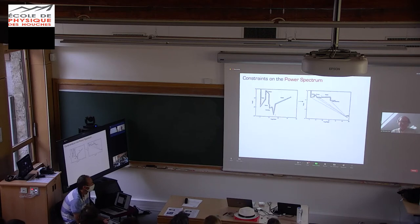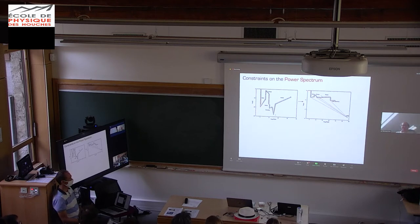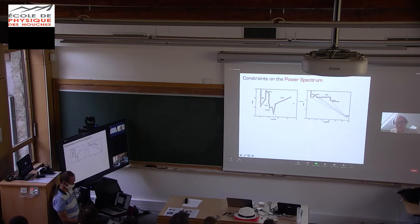Once you have these constraints on beta, you also get constraints on the power spectrum of the fluctuations. This is a diagram Florian showed, showing how you go from beta to the constraints on epsilon — the horizon fluctuations — which is equivalent to the power spectrum. These are equivalent diagrams using the same colour coding.